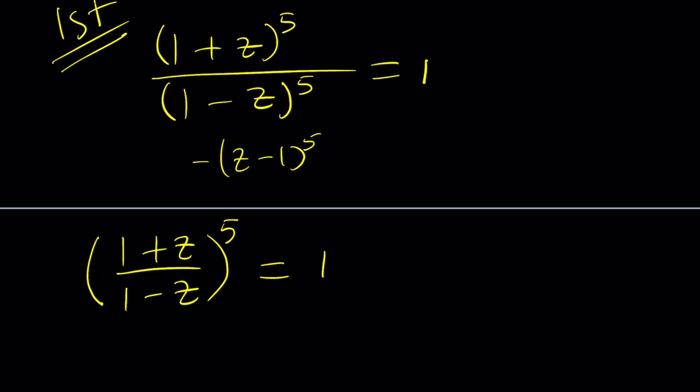Real numbers are also complex numbers — they're included in the set of complex numbers. So let's go ahead and write 1 as a complex number in polar form; in other words, let's complexify it. We replace 1 with e to the power 2πni, where n is an integer.